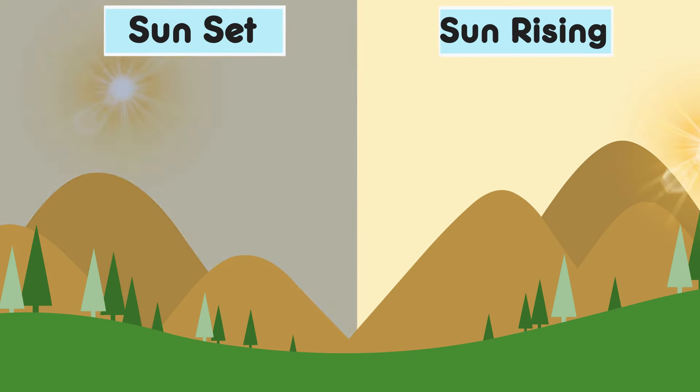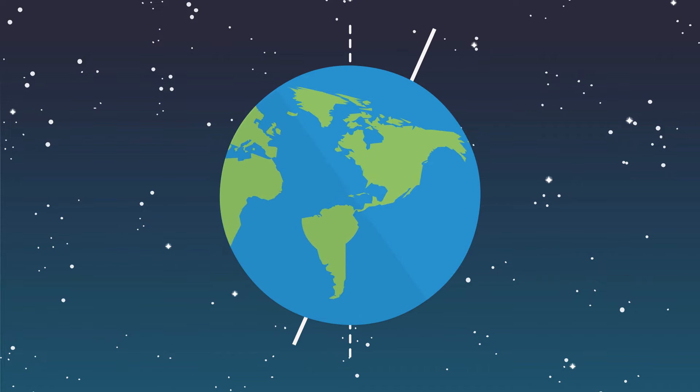As you ponder the sun's apparent motion, consider these key questions. Why does the sun appear to rise in the east and set in the west at your location? What effects would we observe if the Earth rotated in the opposite direction?